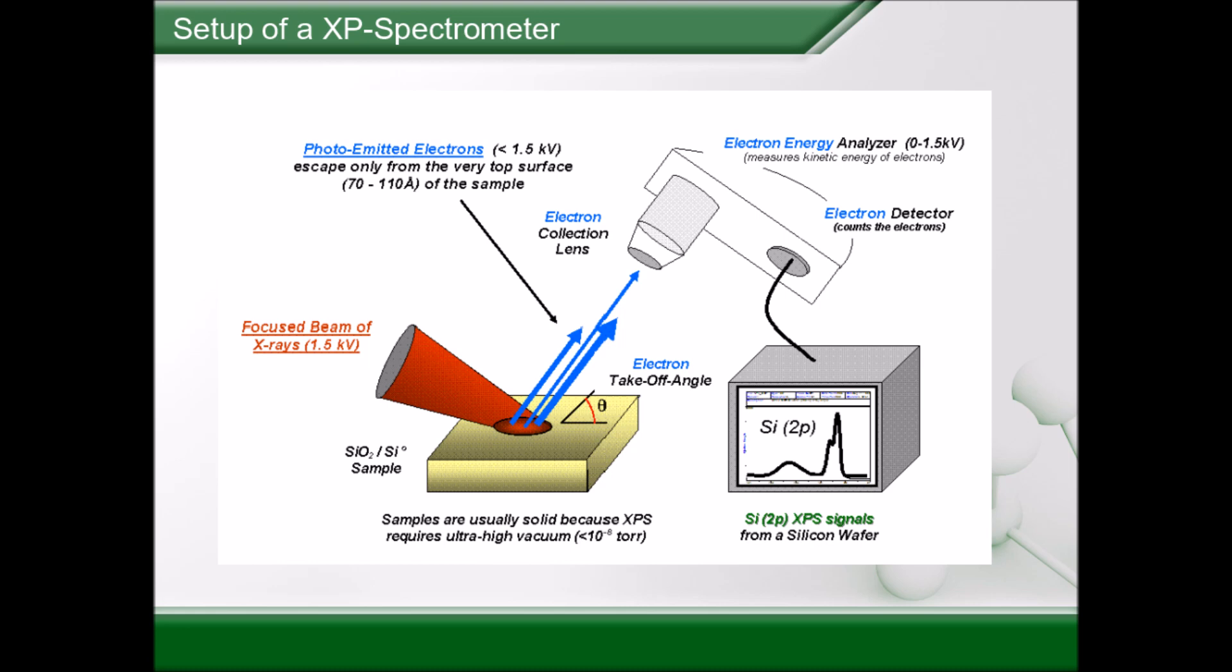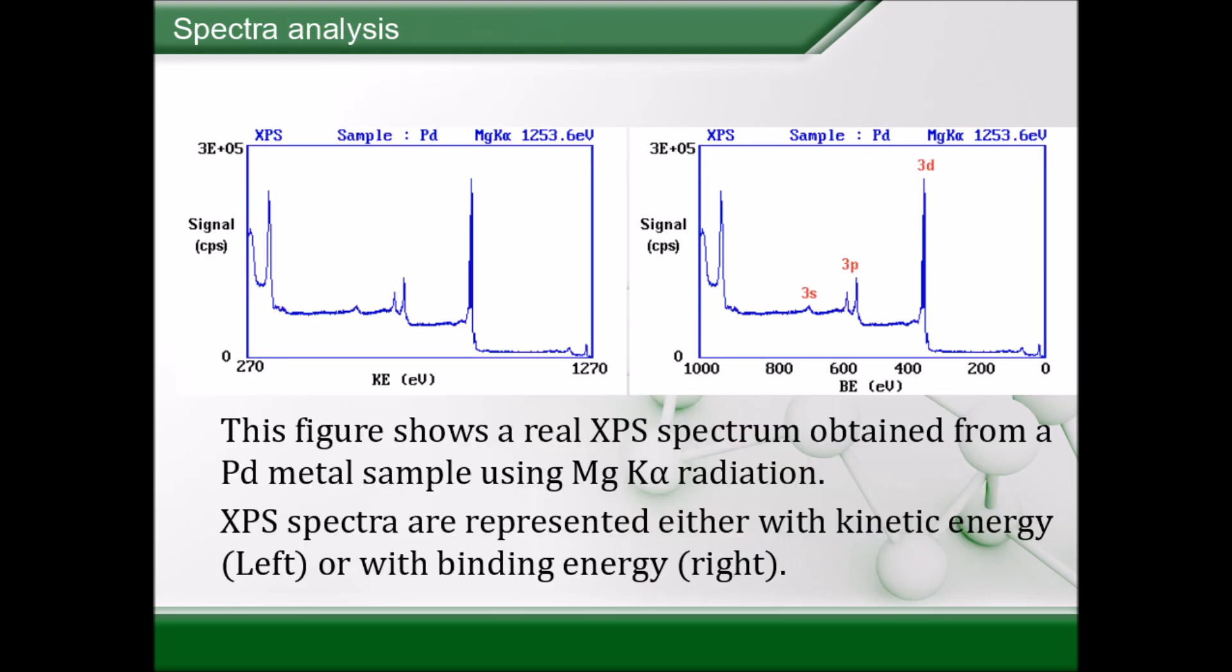Now, finally, this energy is represented on a spectrum, where each electron energy informs us about the elements in this probe. This figure shows the XPS spectrum of a Palladium probe. On the left side, the intensity is represented with respect to the kinetic energy, and on the right side, with respect to the binding energy.